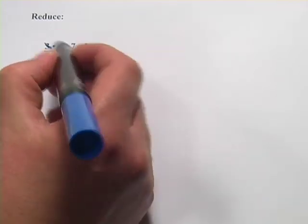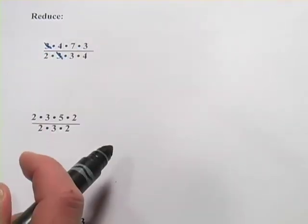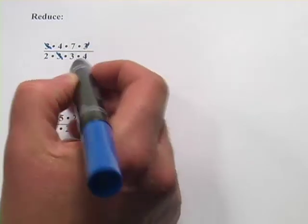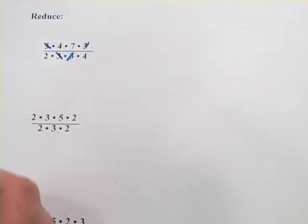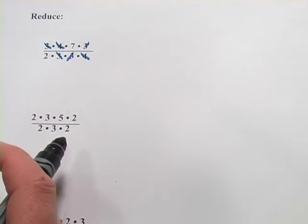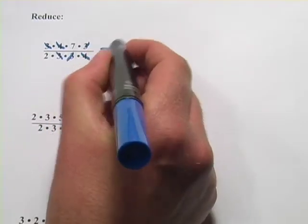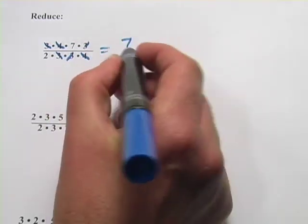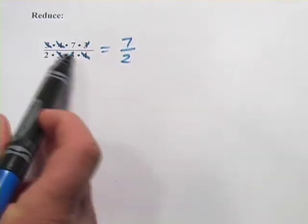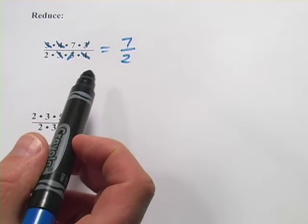So look, I see a 3 up here and a 3 up here. I can cross them out. I see another 3 up here and a 3 up here. Cross them out. I see a 4 up here and a 4 down here. Cross them out. What am I left with? Just a 7 on the top and a 2 on the bottom. So this has been reduced to 7 halves.